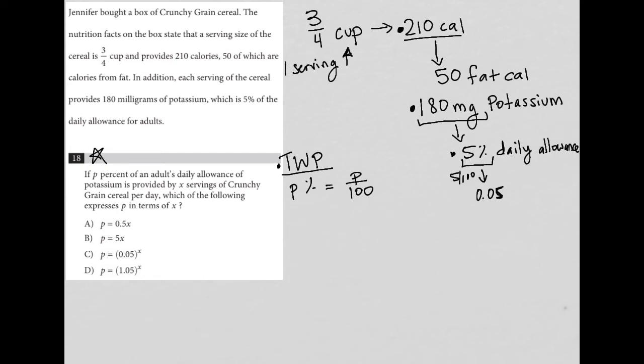So it says it's provided by X servings. So this P over 100 comes from or is equal to X servings. But we know that those X servings each have 0.05 or 5% of the daily allowance of potassium.